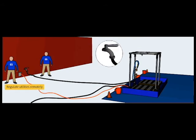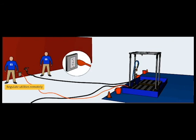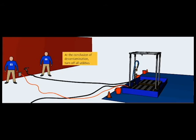For example, water can be turned on and off at the spigot and pumps can be turned on and off at the outlet. At the conclusion of decontamination, turn off all utilities. This may be done by protected personnel in the decon corridor or remotely by equipment support.